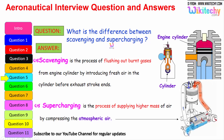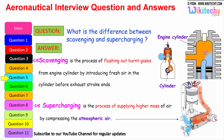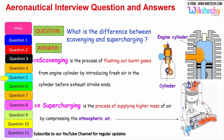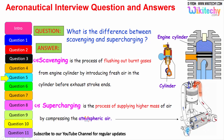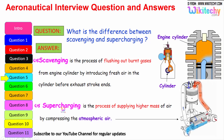What is the difference between scavenging and supercharging? Scavenging is the process of flushing out burnt gases from the engine cylinder by introducing fresh air into the cylinder before the exhaust stroke ends. Supercharging is the process of supplying air at higher than atmospheric pressure by compressing the atmospheric air — high-pressure air is injected into the cylinder.